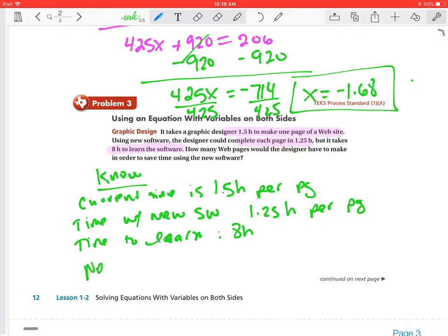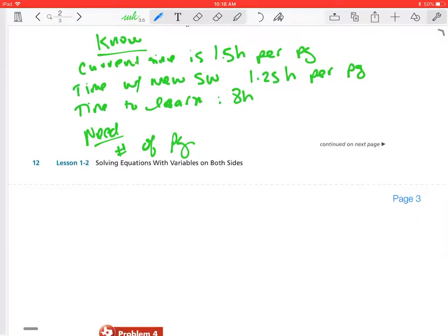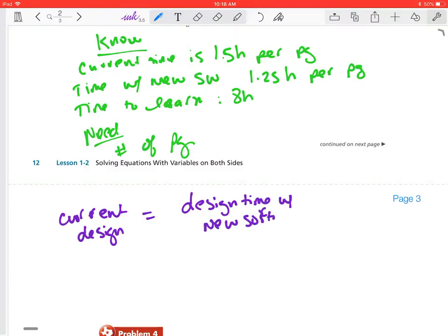We need number of pages. In order to plan for this, we're going to write an equation. We're going to relate this by saying current design time is equal to design time with new software plus the time to learn the software.